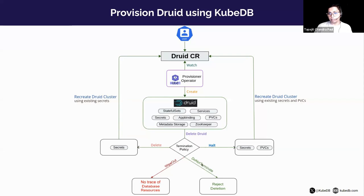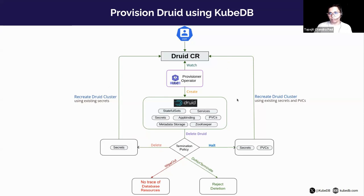There are three kinds of deletion policies for your Druid cluster: halt, wipeout, and do-not-terminate, plus delete. If you set it to halt, secrets and PVCs are not deleted, and a recreated cluster will reuse them. If you set it to do-not-terminate, KubeDB will reject any deletion request. With wipeout, all components are deleted. With delete, only the secrets are kept, and you can use that secret to recreate the cluster.